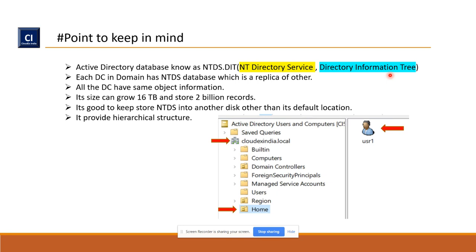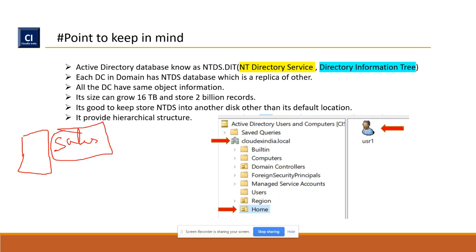Do you know how to access directory services — for example, if you are accessing users from ntds.dit? Which service or protocol do we use? Suppose from a file server you want to give permission to a sales folder and need to search for users. Once you go into the sales folder properties under Sharing and Security, you add users — but which service is calling that directory information from Active Directory to the server?